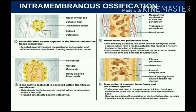Subsequent remodeling around trapped blood vessels results in compact bone. The ossification center appears in the fibrous connective tissue. The bone matrix secreted by osteoblasts forms the structure, eventually producing compact bone with red bone marrow.